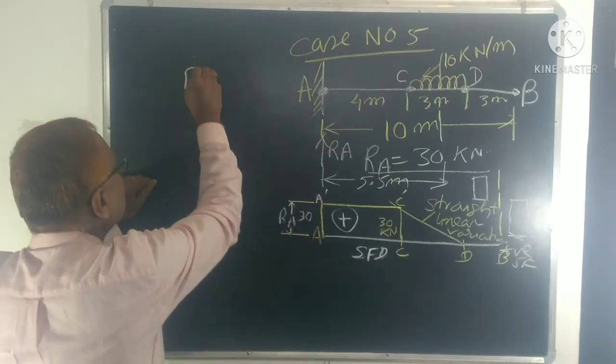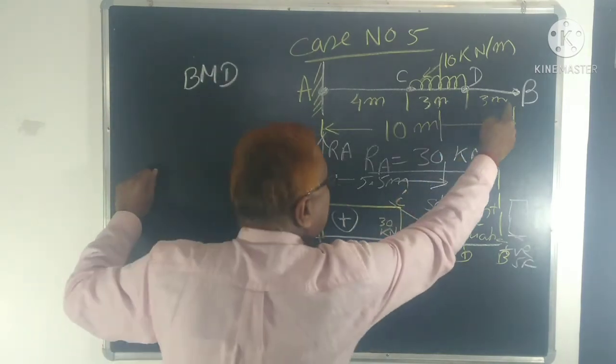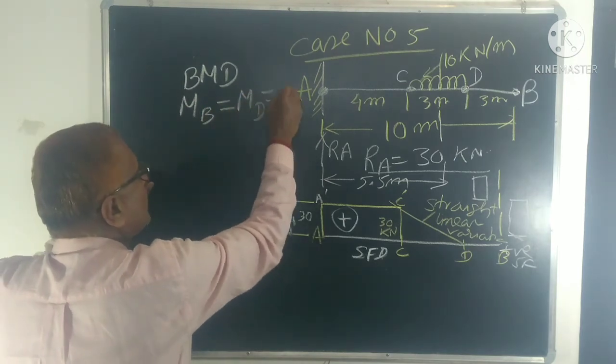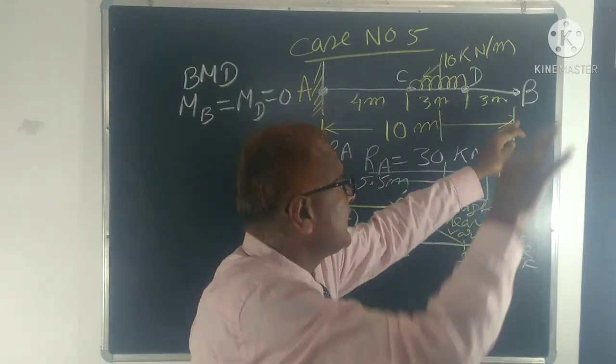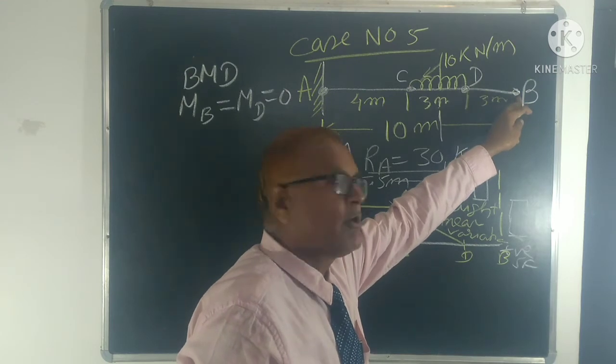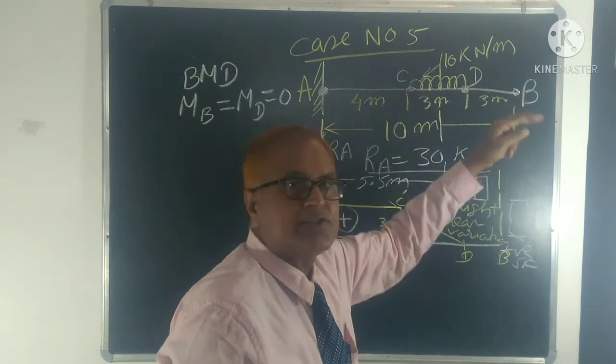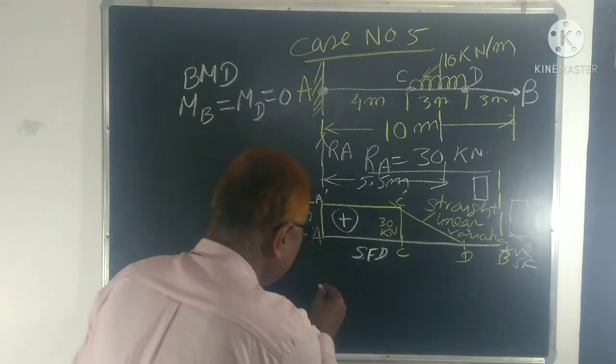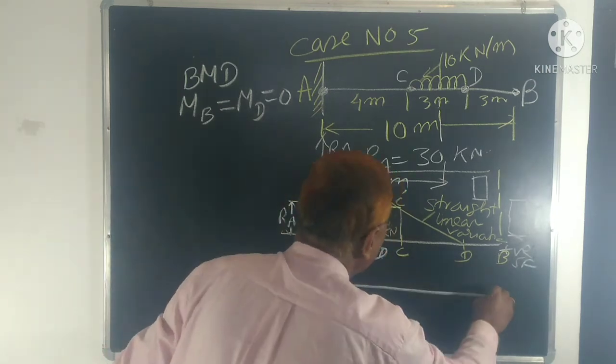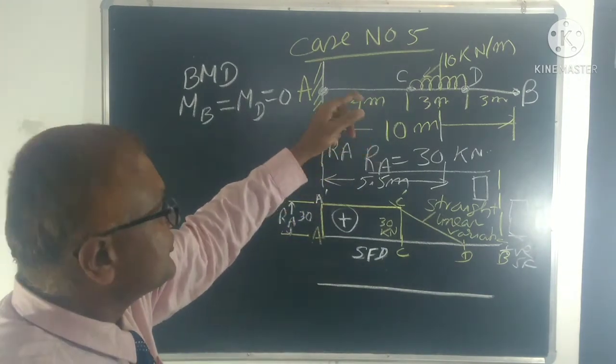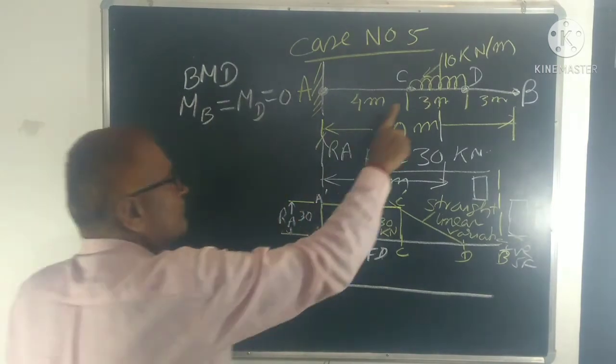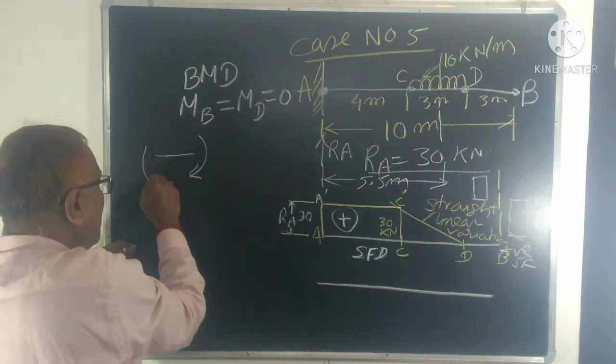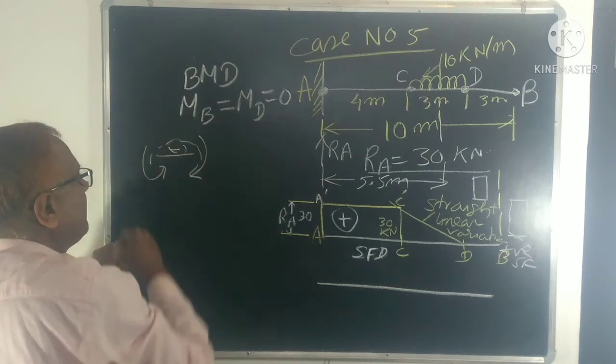Now for BMD, bending moment diagram, MB and MD equal to zero. Because at B right side there is no load, no distance, so BMD is zero. And at D there is distance but there is no load, load is zero, so bending moment at D is zero. Now at C you have to find out. For this what will we do? We draw one line and see whether bending moment is hogging or sagging. So for this, like this, this is the moment is coming, couple is generated, so this will be hogged one. Minus bending moment means hogging bending moment generated for this cantilever beam.